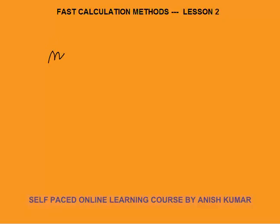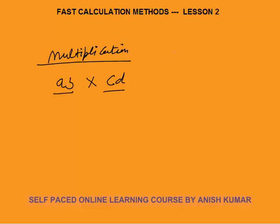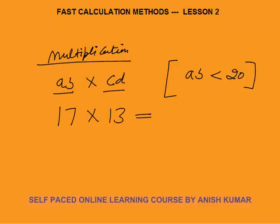First, I'm going to discuss two-digit into two-digit multiplication. Suppose you need to multiply A×B into C×D — both are two-digit numbers — given the condition that AB is less than 20. I will take one of the numbers as less than 20 because I told you to learn tables from 1 to 20. For example, you need to multiply 17 into 13.